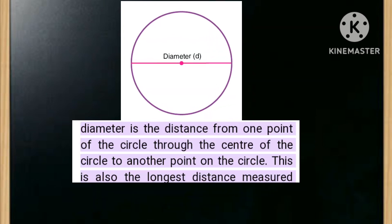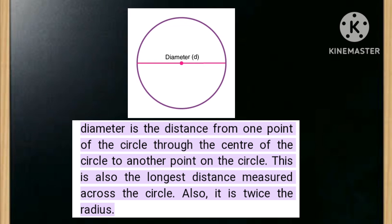What is the diameter of a circle? Diameter is the distance from one point of the circle through the center of the circle to another point on the circle. This is also the longest distance measured across the circle. Also, it is twice the radius.